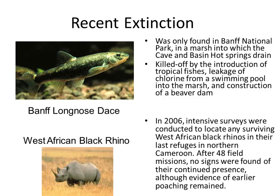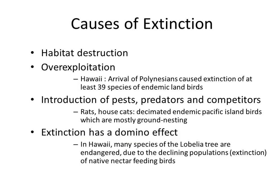The West African Black Rhino: in 2006, they did intensive surveys trying to find any West African Black Rhinos in the last refuges in Cameroon. After 48 field missions, no signs were found of their continued presence, although evidence of earlier poaching was still there. Habitat destruction, over-exploitation, introduction of pests, predators, and competitors are all causes of extinction.